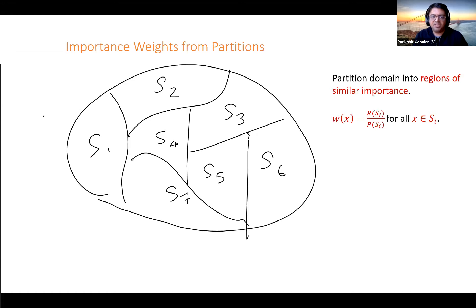Here are the rules of the game. You have these two distributions P and R on a certain domain. What you're allowed to do is partition this domain into regions where you think all the points have roughly the same importance. And that's it. Once you find the partition, you are done. Every point in the same partition gets an equal weight, which is the right importance weight for this whole partition. This defines a new distribution where you first sample a partition according to R, but within the partition, you sample according to your old prior distribution P.